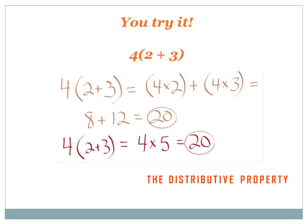4 times the expression (2 plus 3). The distributive property says that we can multiply the 4 times both the 2 and the 3 and put a plus sign between them, and we won't have changed the answer. So I've got 4 times 2, plus 4 times 3. Now, 4 times 2 equals 8, and 4 times 3 equals 12. I've got 8 plus 12 equals 20. Let's try it the other way — solving the part in the parentheses: 4 times (2 plus 3), 2 plus 3 equals 5, 4 times 5 equals 20. Same answer. It worked.